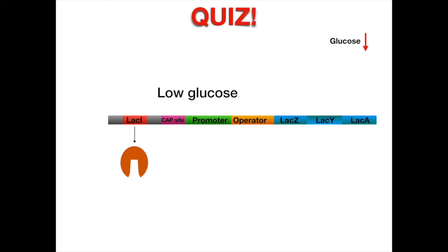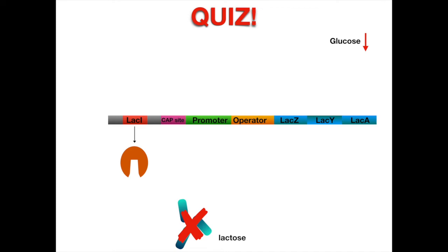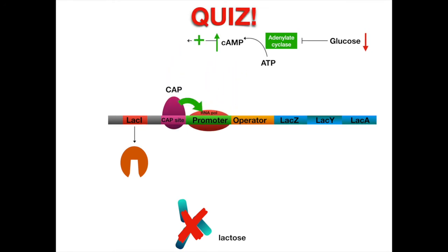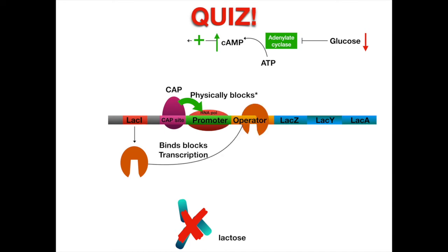Low glucose and no lactose. You may think yes, because low glucose means that CAP protein will bind and stimulate RNA polymerase binding. However, with no lactose available, the repressor protein will be bound to the operator, physically preventing RNA polymerase. Lac genes will not be expressed.